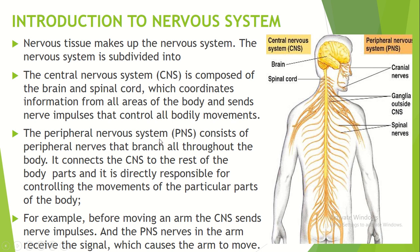The Peripheral Nervous System consists of peripheral nerves that branch throughout the body. All parts of the body are connected to the Peripheral Nervous System. It connects the Central Nervous System to the rest of the body parts and is directly responsible for controlling the movements of particular parts.